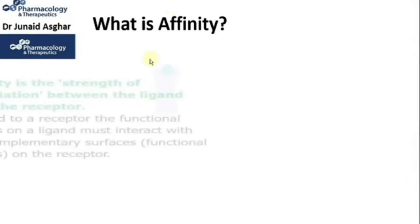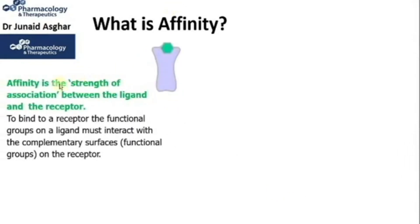Let's see what is affinity. Affinity is the strength of association between the ligand and the receptor. This is our ligand, or the agonist, and this is our receptor. Now in order to bind to a receptor, the functional groups on the ligand must interact with the complementary surfaces of functional groups on the receptor — so the functional groups on the ligand should bind with the functional groups on the receptor.